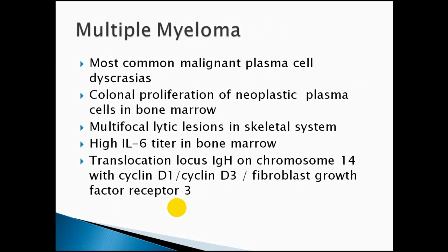Multiple myeloma is the most common form of malignant plasma cell dyscrasia. It is defined as a clonal proliferation of neoplastic plasma cells in the bone marrow — one type of mutated, cancerous plasma cell that is overproduced, replacing normal red bone marrow and normal plasma cells. There are multiple skeletal lesions because the neoplastic plasma cells activate osteoclasts, which destroy bone structure, resulting in multiple lesions throughout the skeletal system.